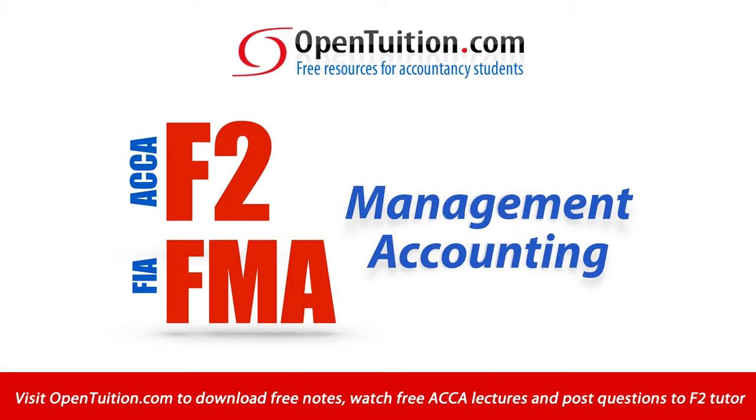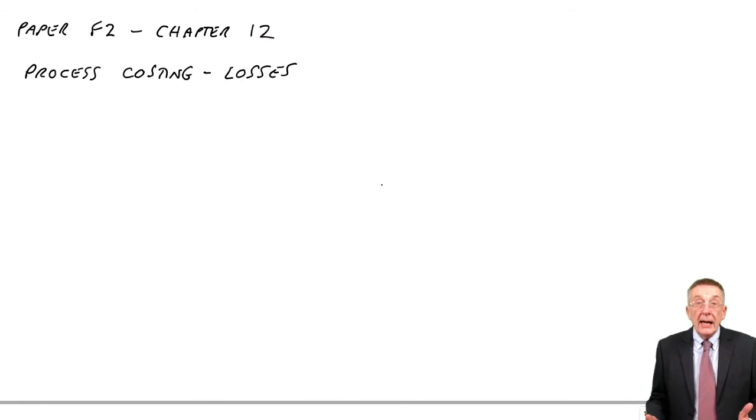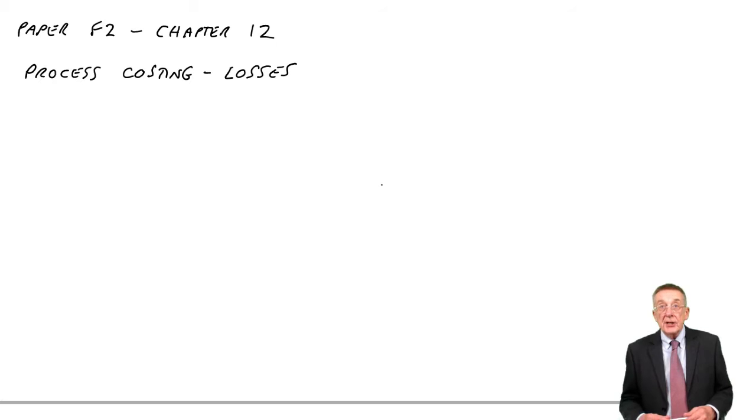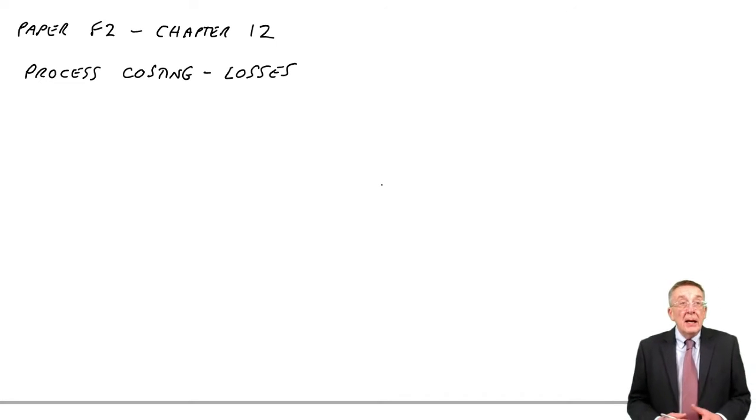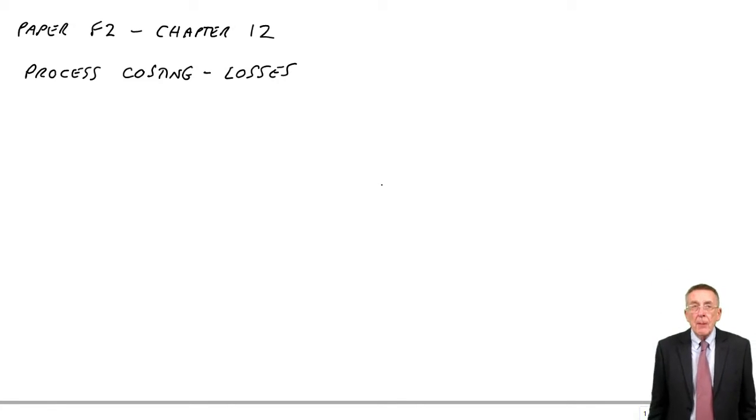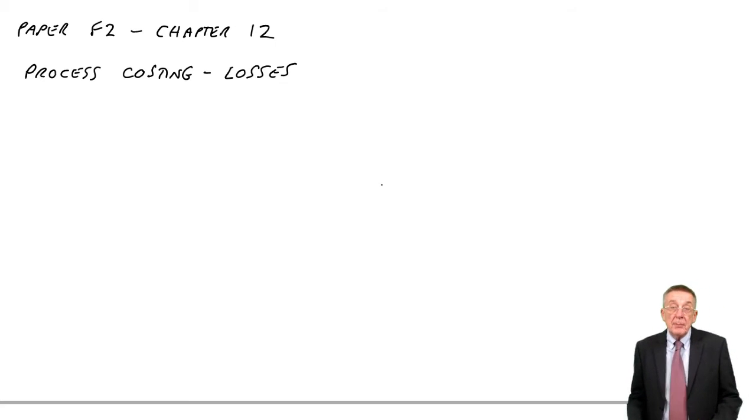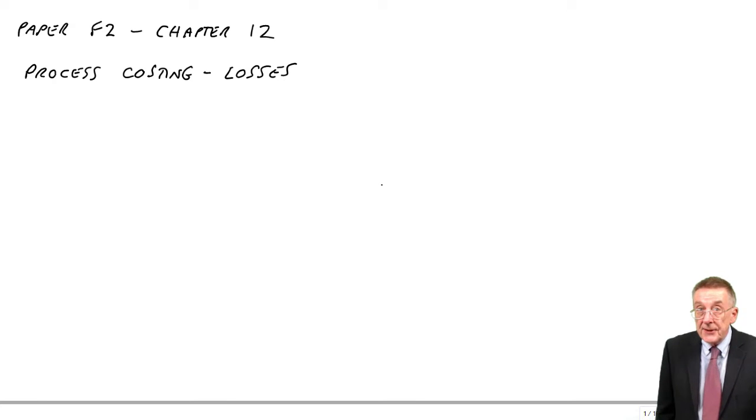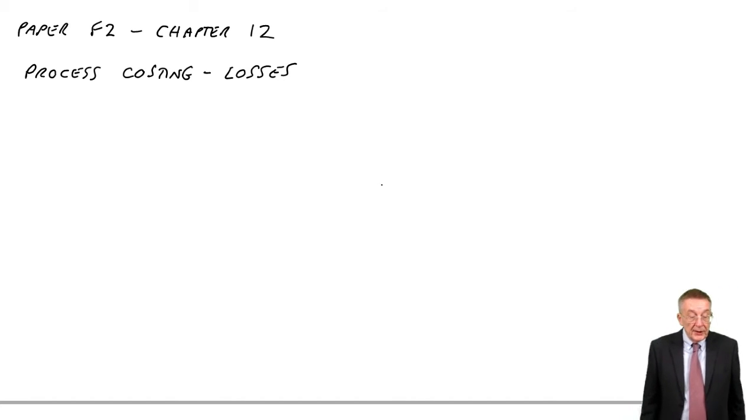This is a lecture from OpenTuition. To benefit from the lecture, you should download the free lecture notes from OpenTuition.com. This is a lecture on chapter 12 of the free lecture notes for paper M2, and we're still on process costing. In the previous lecture I introduced it and showed you what the basic idea was, but I said there were three problem areas. The first area you could be tested on is losses.